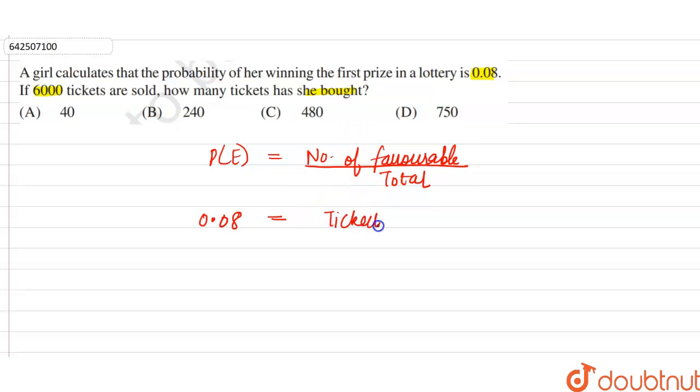So, tickets the girl has bought, and the total tickets are given as 6,000. So, divided by 6,000. So this is equal to tickets bought.